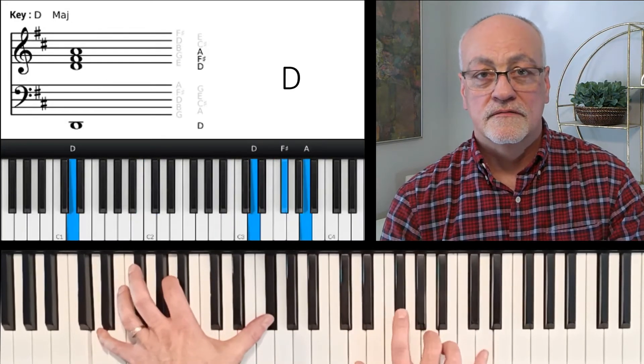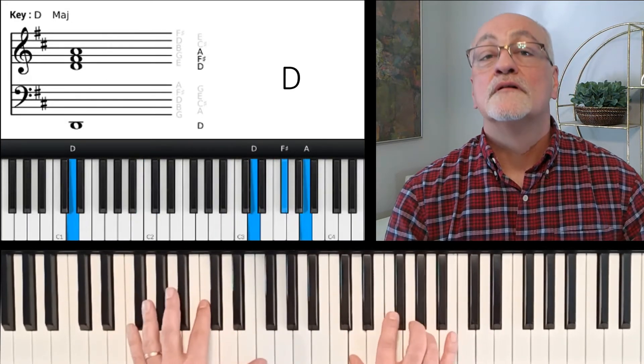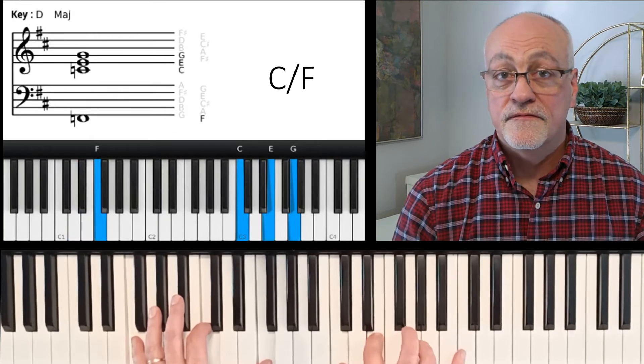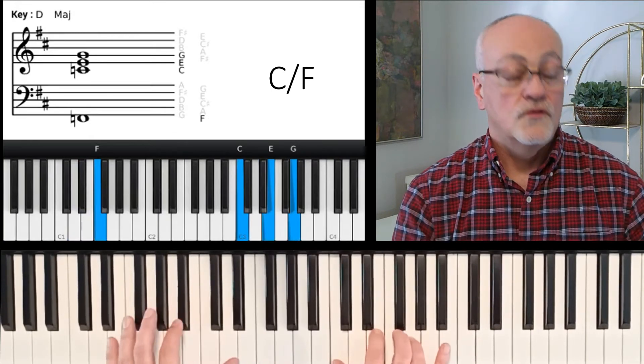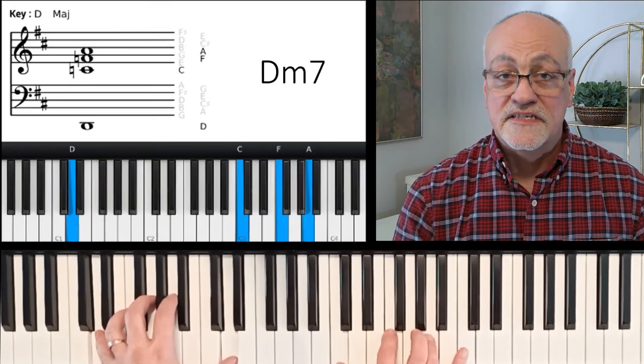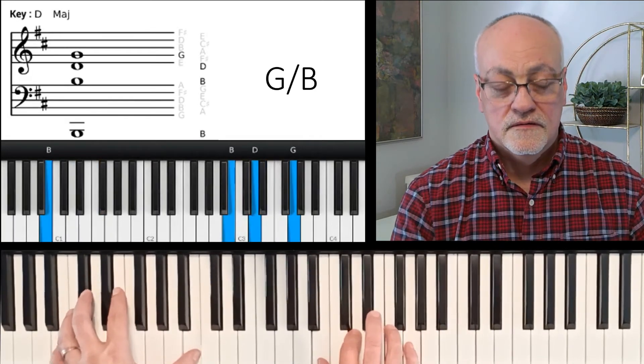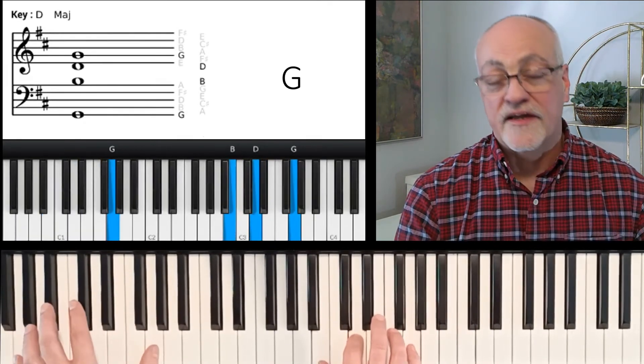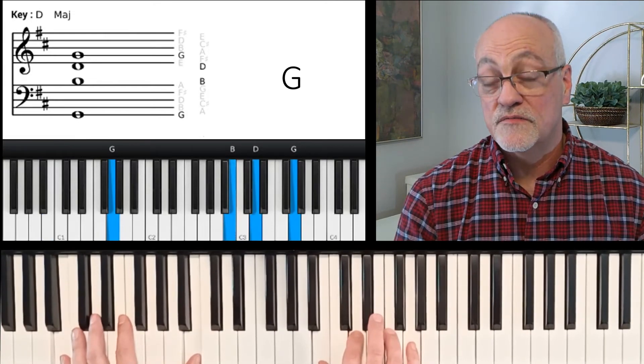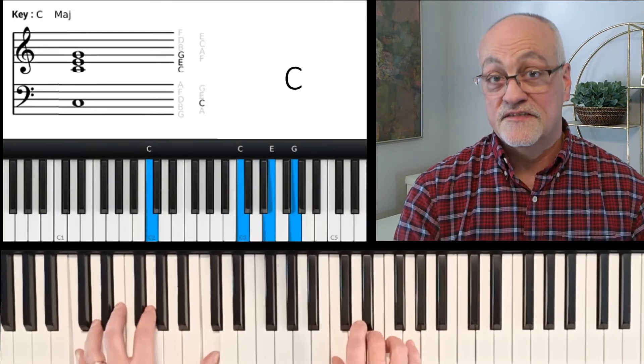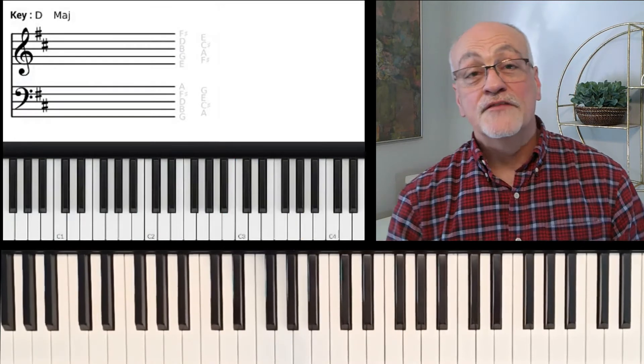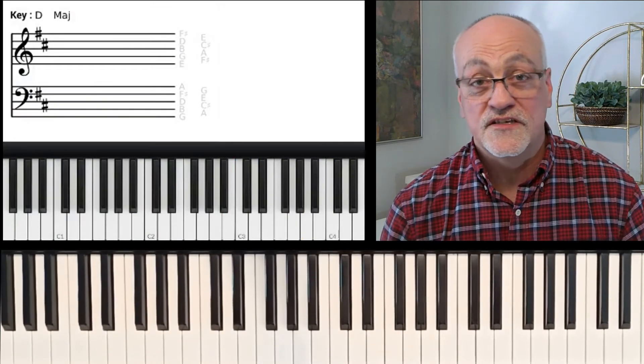Let me run through that again. D chord. C over F. D minor chord. Now I could play a regular G here or a G with B in the bass, which kind of has a nice step up there.